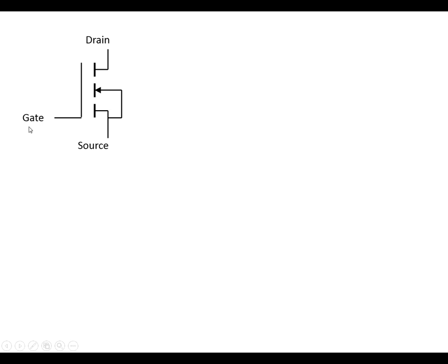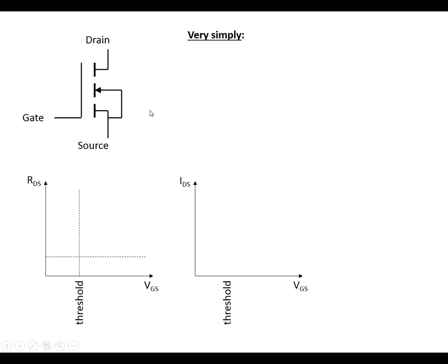The gate is going to be the control of the characteristics of the MOSFET. What we're going to do very simply is just look at the characteristics in terms of the resistance between the drain and source and the current flowing between the drain and the source. These are going to be controlled by the voltage across the gate and the source.